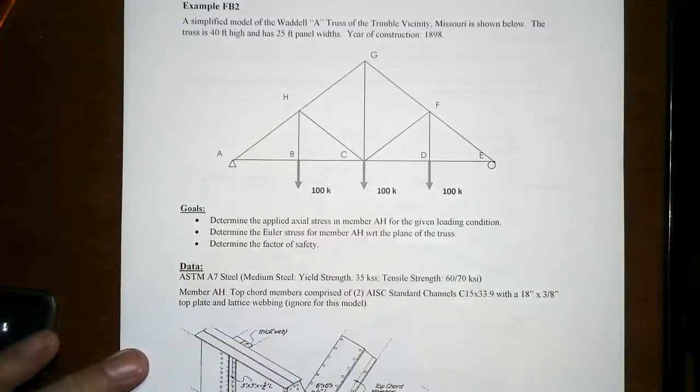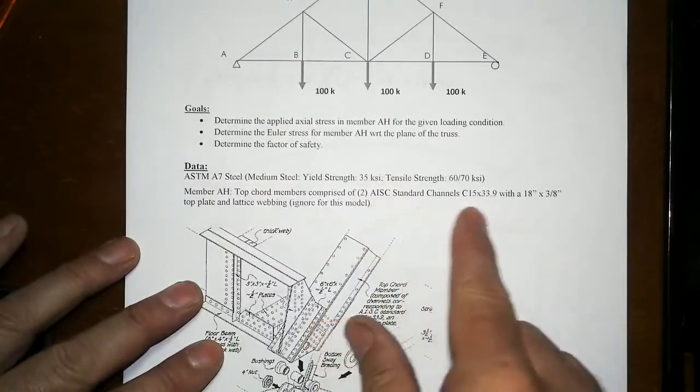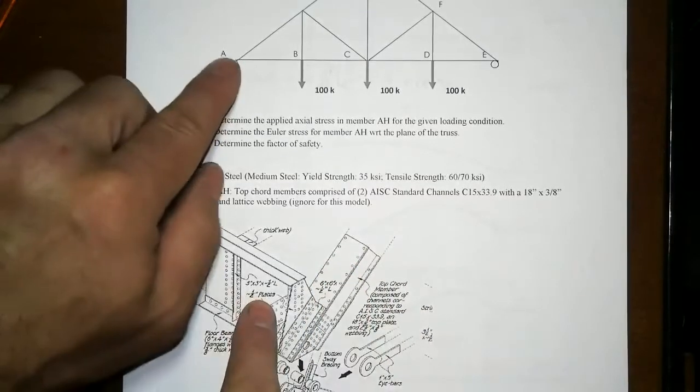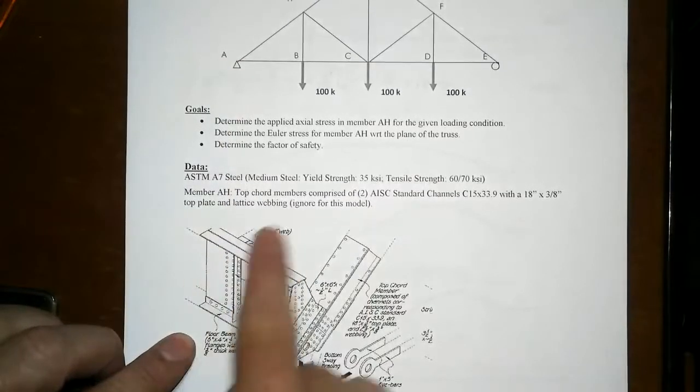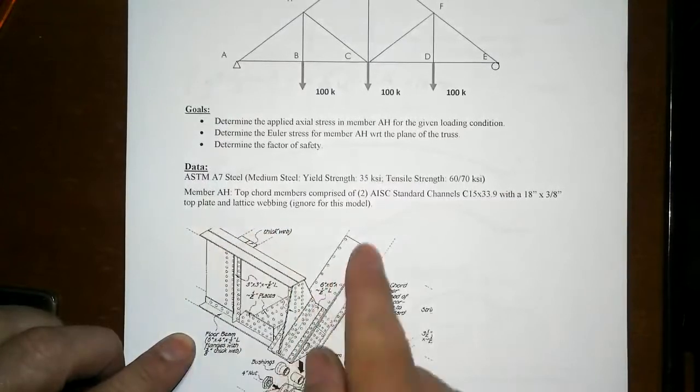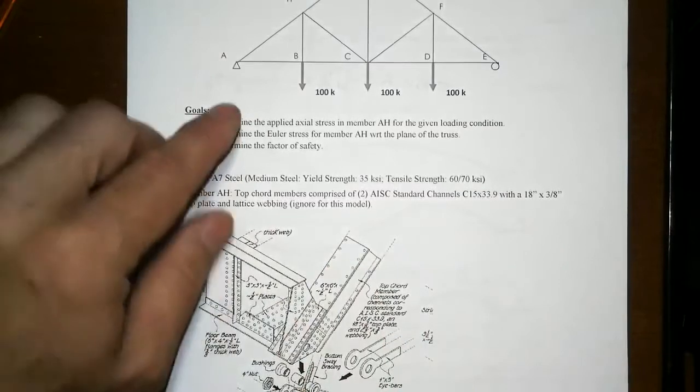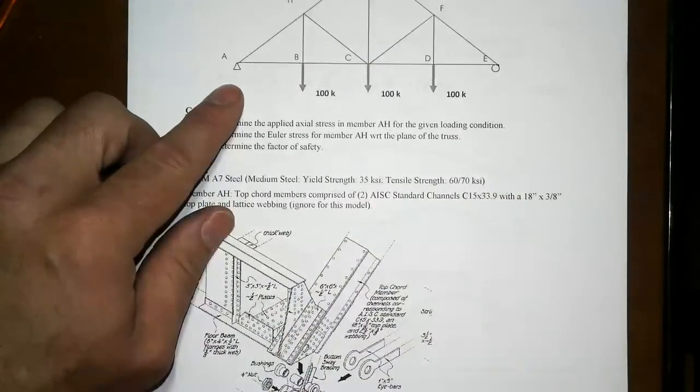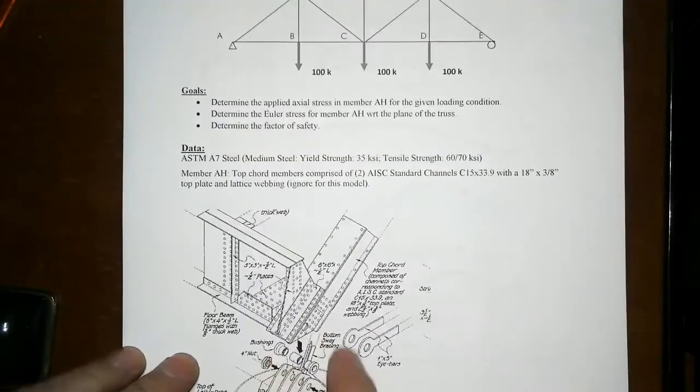This top cord member AH was comprised of two steel channels that had a cover plate. You're seeing a perspective drawing of that. This is the transverse floor beam that goes in and out of the page. The train tracks would be going across this way, and this diagonal is coming in. That top cord comes down to the abutment for the pin support. You got the bottom cord I-beams coming in here, and everything's connected with that big gigantic four-inch pin that connects all that together.